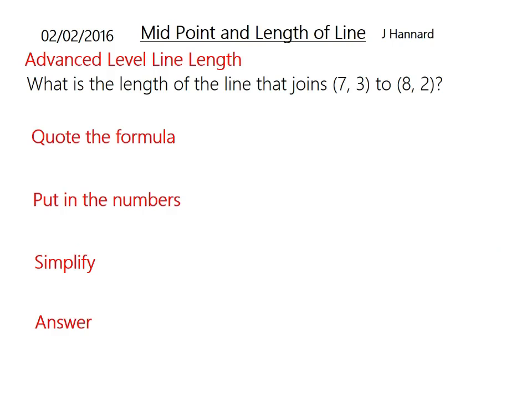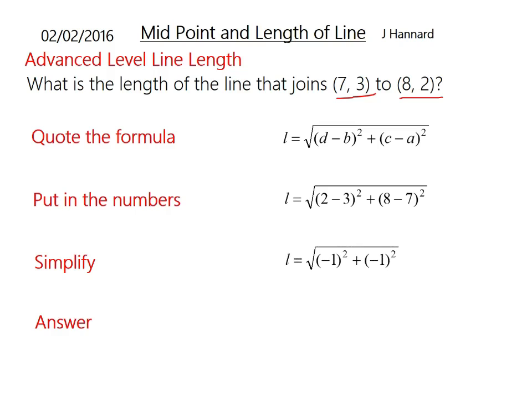Here is an example. What is the length of a line that joins 7, 3 and 8, 2? Quote your formula: length equals back take back squared added to front take front squared all rooted. Put in your numbers: 2 minus 3 all squared added to 8 minus 7 all squared and rooted. Simplify that. You get the root of minus 1 squared added to minus 1 squared which is going to be root 2. That is your answer. Leave your answer as a surd. You can give the examiner a decimal if you want, but they might ask for the exact length.